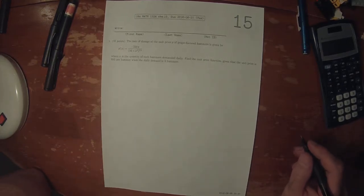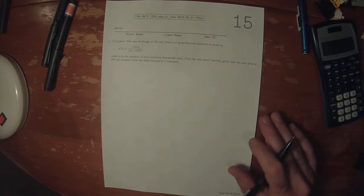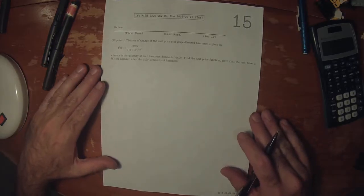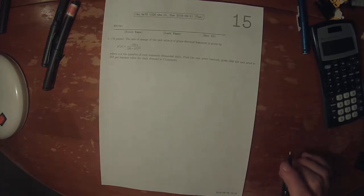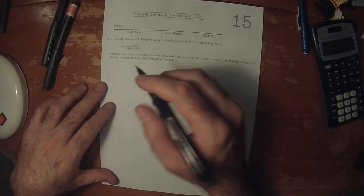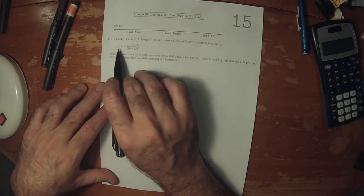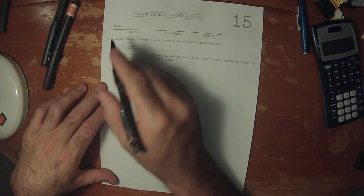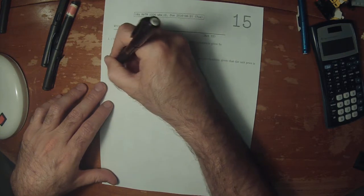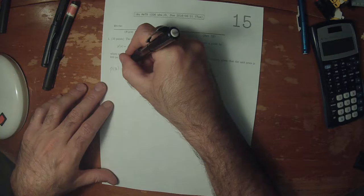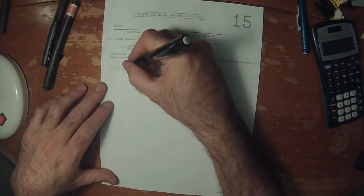This is a solution to written homework 15. It is an initial value problem, and to make it a little more interesting it requires a substitution. To recover p of x, we know that p of x must be the anti-derivative of its derivative.